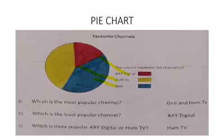Now look at these questions. Which is the most popular channel? Jio TV and Hum TV, because they both cover the largest area of the sector. Question number two: which is the least popular channel? ARY Digital is the least popular channel.